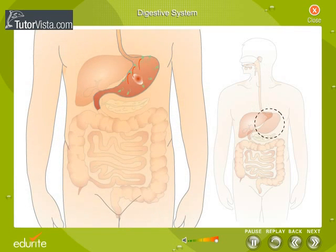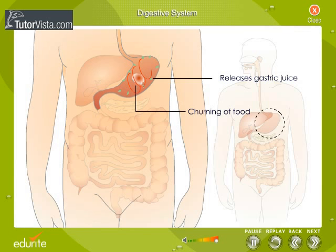The stomach stores the food temporarily. It releases a secretion called gastric juice, which breaks down the proteins.